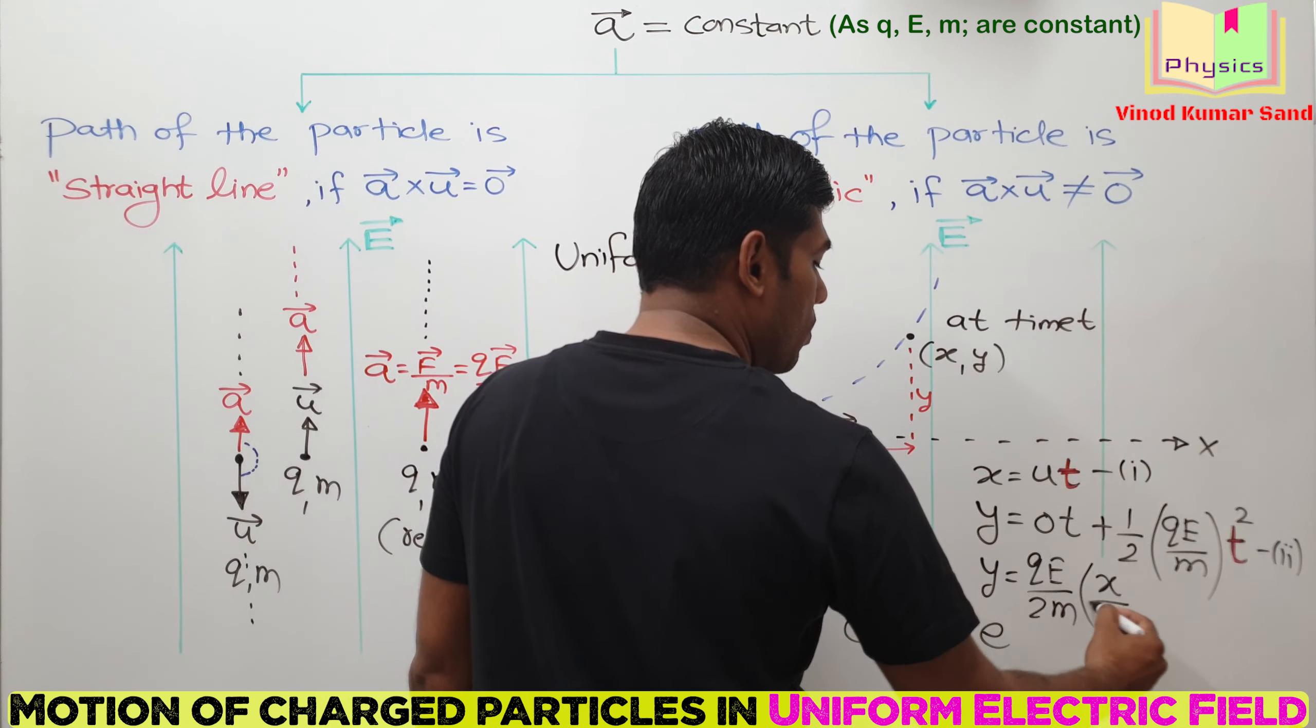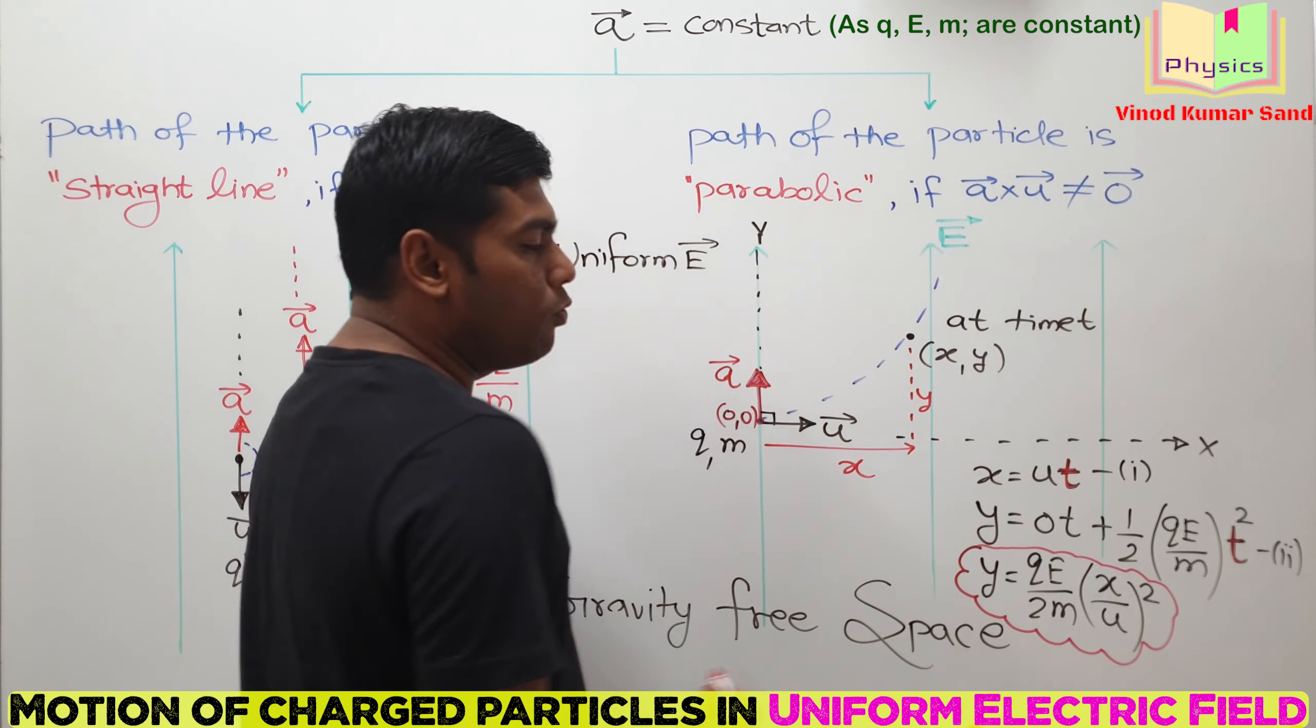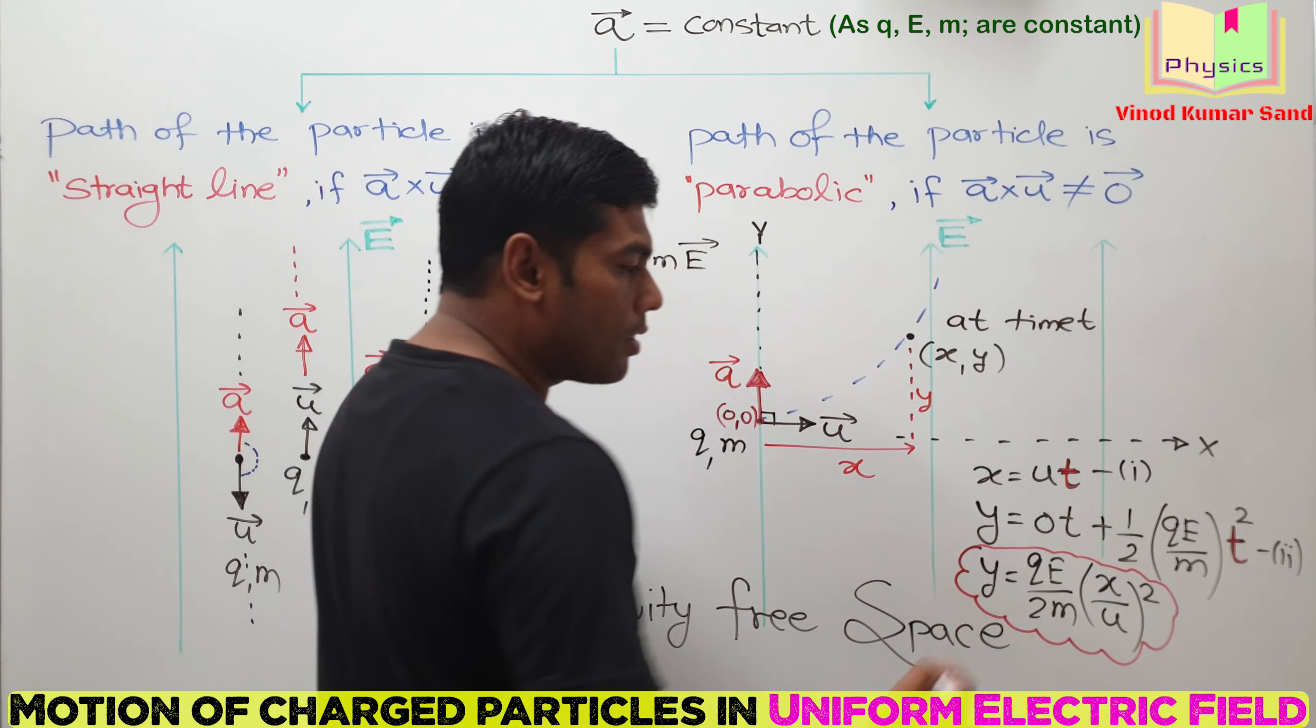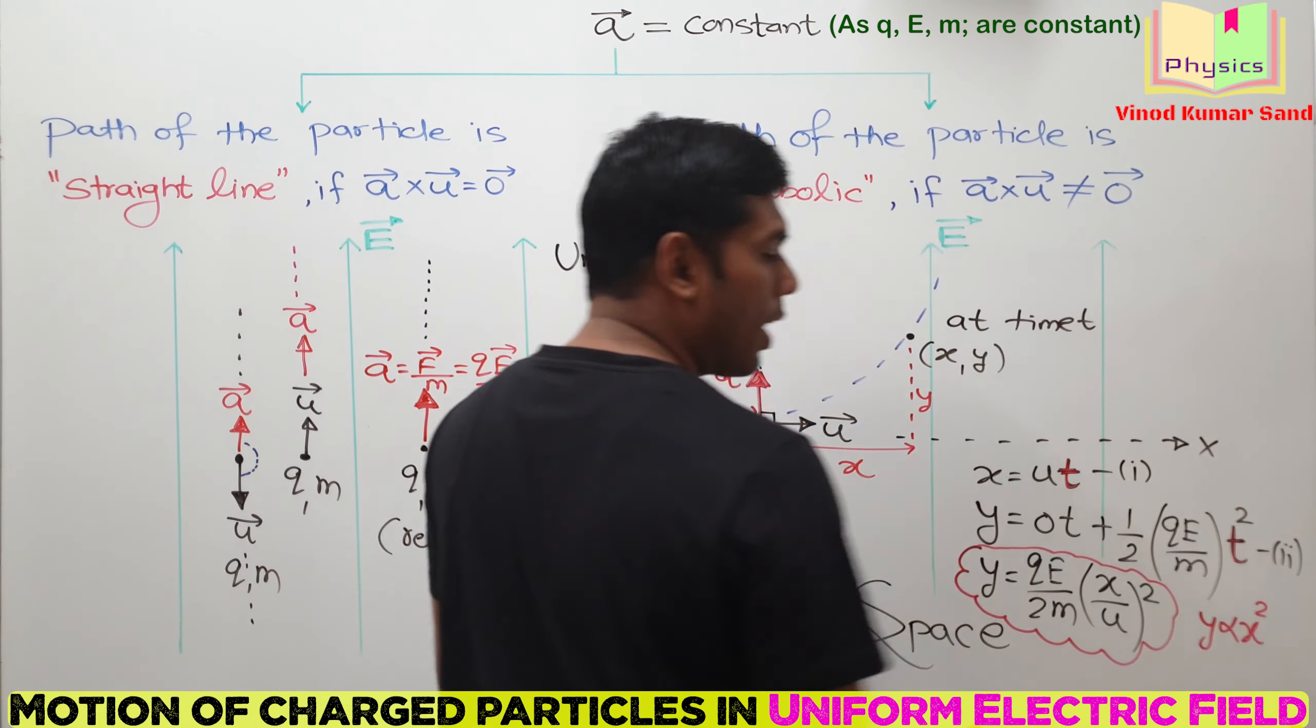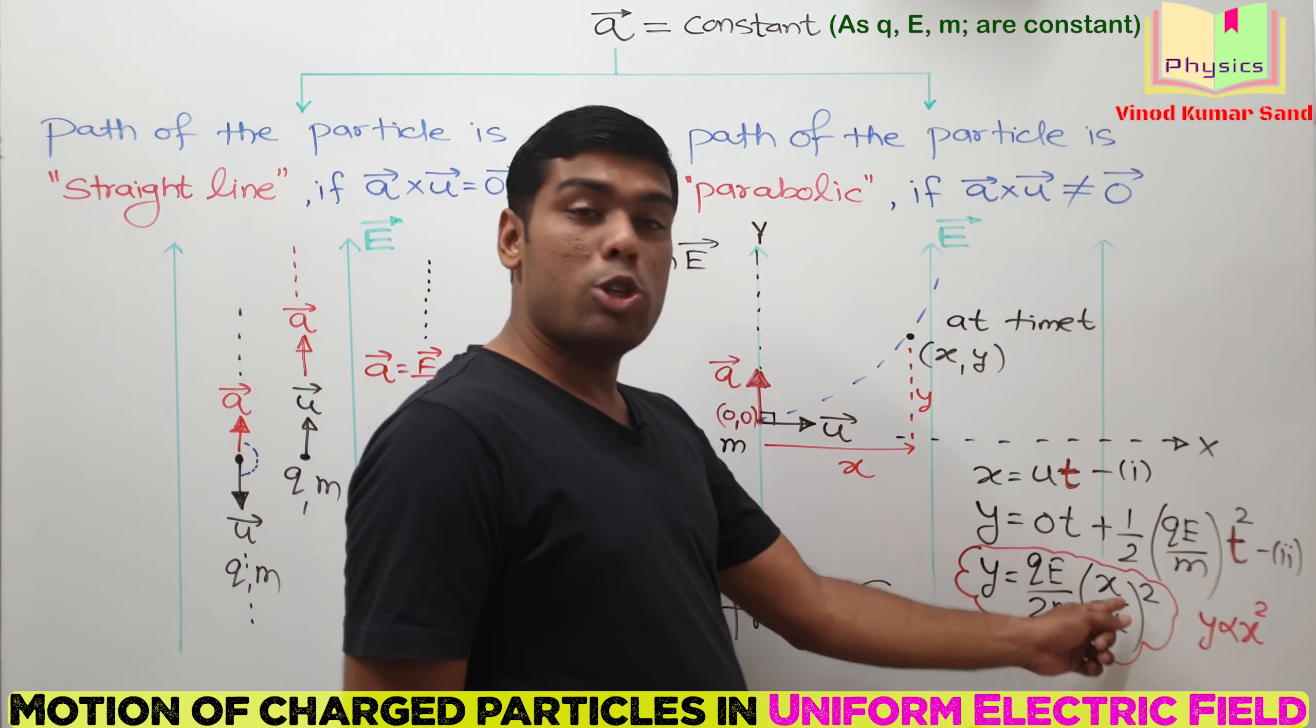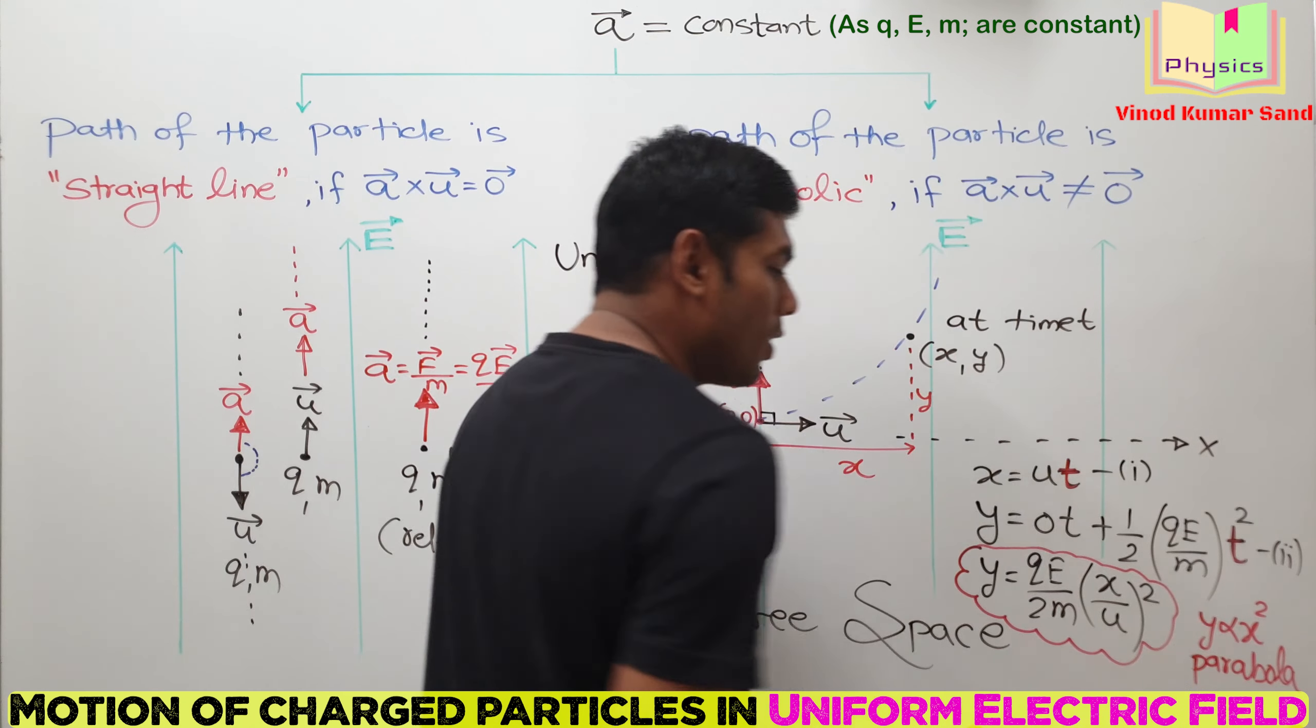Do you agree with this expression? This expression is pretty interesting. If we look carefully, then it is resembling y is proportional to x square. If y is proportional to x square, it means what should be the path? It indicates a parabola. Nice and intuitive concept.